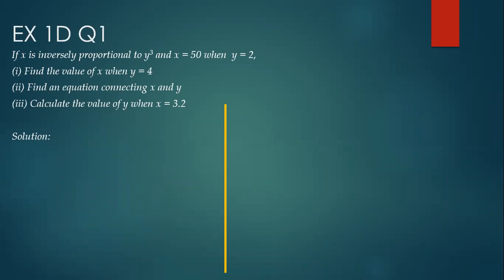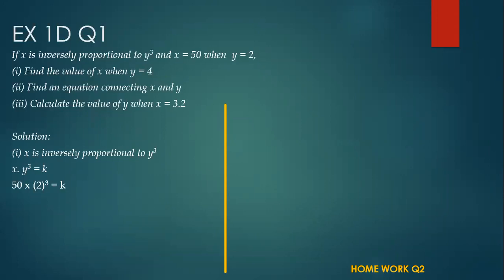Since x is inversely proportional to y-cubed, that means x times y-cubed is equal to k. Now replace x with 50 and y with 2, so you are going to get the value of k as 400.